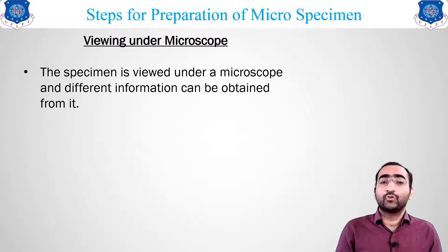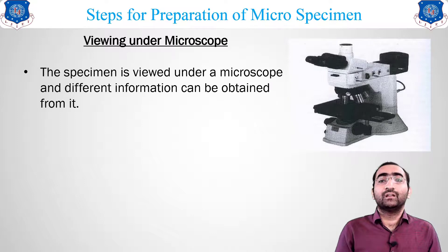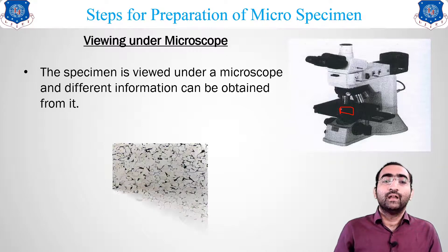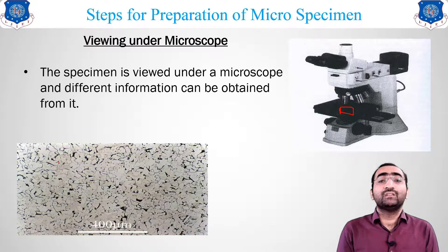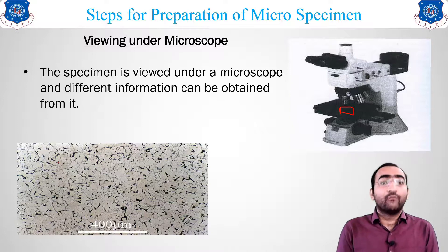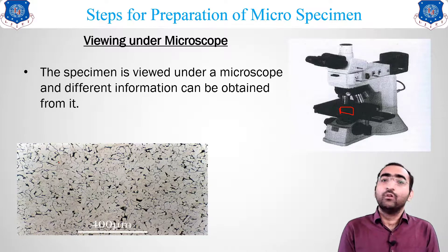The last step is viewing under the microscope. Place the specimen under the metallurgical microscope and observe the microstructure. This was all about the different steps required for preparation of a micro specimen. In upcoming lectures we will discuss how the microscope works, its construction principle, and other methods like sulfur printing and phosphorus printing. Thank you.